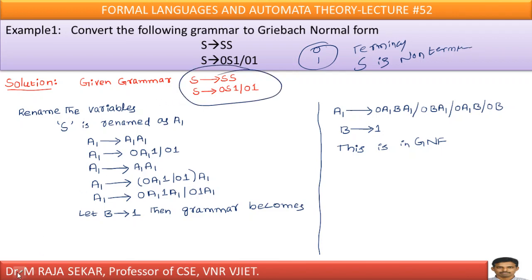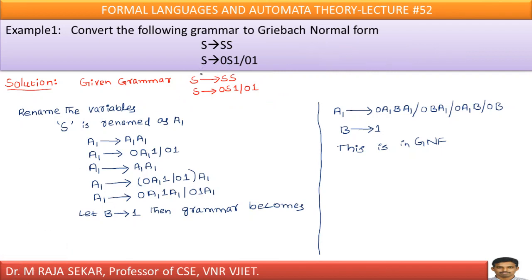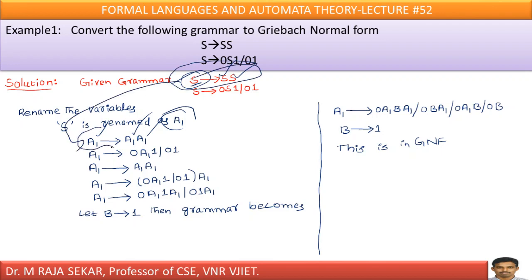Now let me rename the variables. In the place of S, let me write A1. So S is renamed to A1 throughout. Therefore this production S → S S will be converted into A1 → A1 A1. After renaming, this particular production will change.